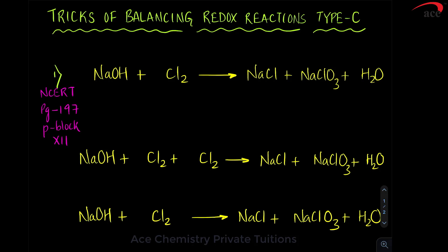So, we come to the last type, Type C type of a redox reaction. Type C type of a redox reaction you can remember they are nothing but disproportionation.